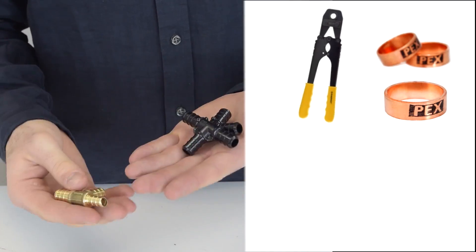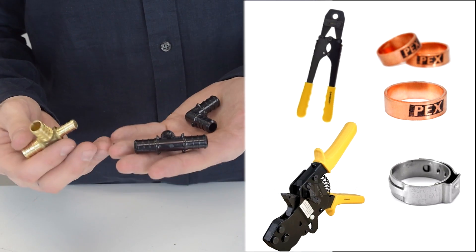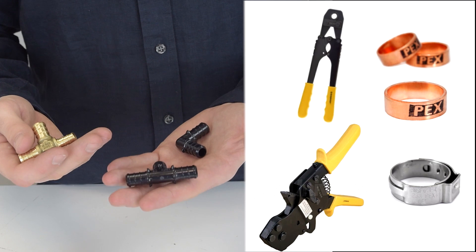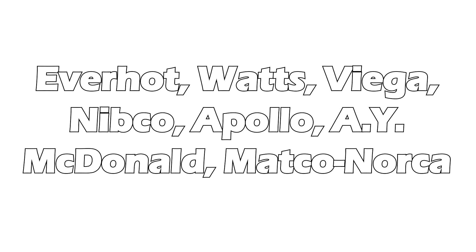It's available in brass or poly, and obviously you'll need a crimp tool and crimp rings for connection unless you're using the clamp method, then you'll need the cinch tool with cinch clamps. These are the biggest manufacturers of crimp and cinch fittings by brand. Crimping is compatible with all types of PEX tubing except for PEX-AL-PEX.